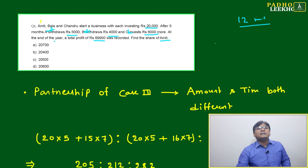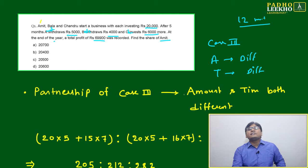One thing is very clear after seeing itself, it is Case 3. Case 3 means amount also different and time period also different. Both are different.